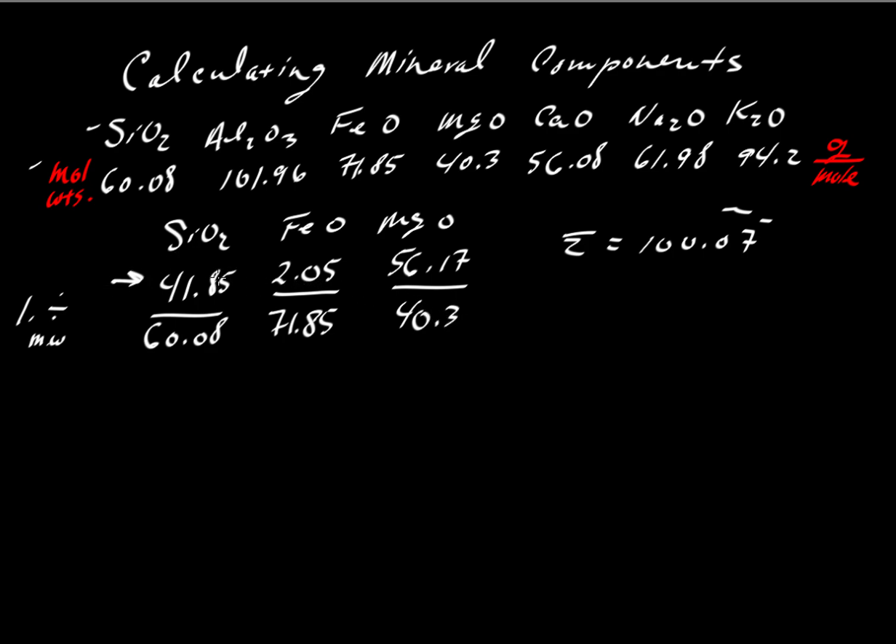So these can be thought of as grams. If we had 100 grams of material, then 56 grams would be MgO, another 2.05 grams would be iron, and 41.85 grams would be silica. If we divide all of these by something that has units of grams per mole, the molecular weights, then the grams will cancel and the mole will come out here on top, and we'll have mole proportions instead of weight proportions.